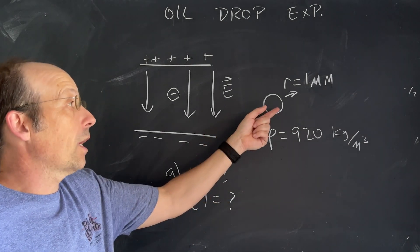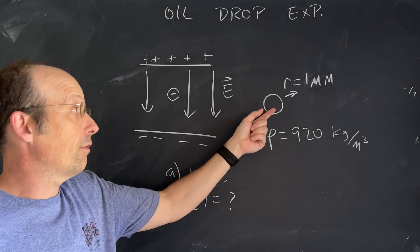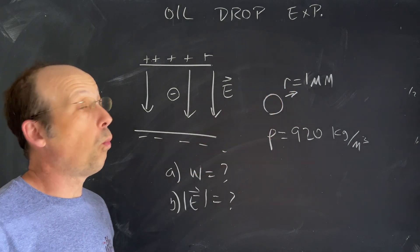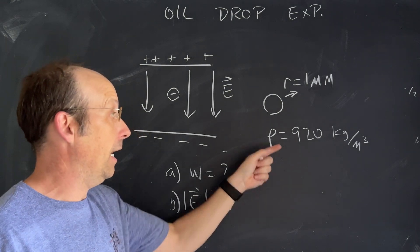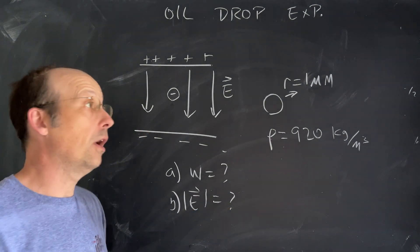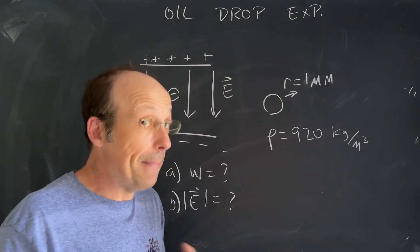In this case we're given the radius of the drop, we can assume it's a sphere of radius one micrometer, and it has a density of 920 kilograms per cubic meter.